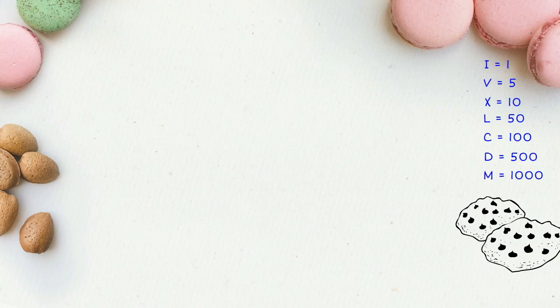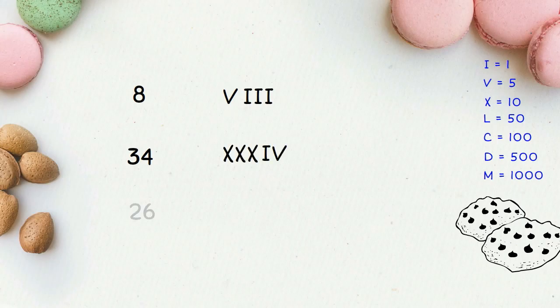Let's have a look at some examples. To write 8 we'll have 5 and 3. To write 34 we'll have 30 and 4. To write 26 we'll have 20, 5 and 1.